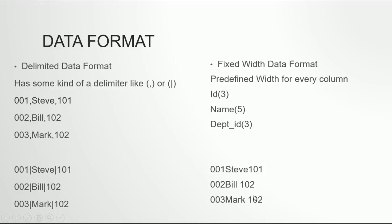In a fixed-width data format, you will have a complete string and your control file will instruct SQL Loader to take the first three characters for the first column, the next five for the second column, and so on. Whenever data falls short of the defined length, you pad it with spaces. It's essentially like using Oracle's SUBSTR function to parse the whole string. These are the two ways in which data can be formatted in a data file.